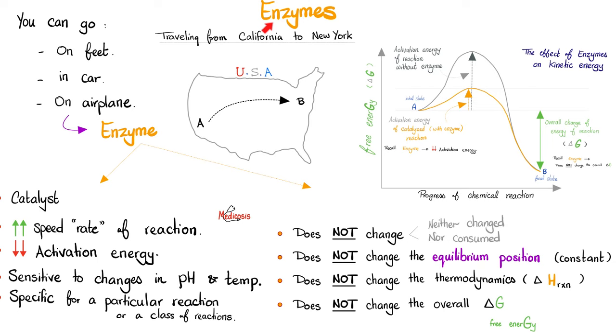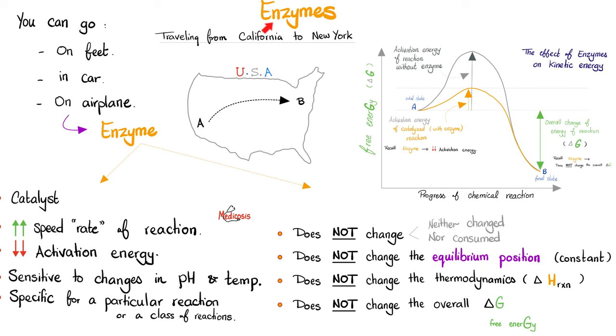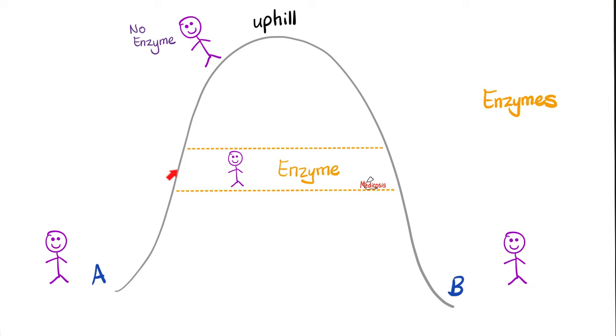This is my biochemistry playlist. Please watch these videos in order. Most enzymes in your body are proteins. Enzymes are catalysts, indeed. They speed the rate of the reaction by lowering the activation energy. However, they do not change the equilibrium, nor do they change the overall free energy. The enzyme is like a shortcut. It's a catalyst. It increases the rate or the speed of the reaction.